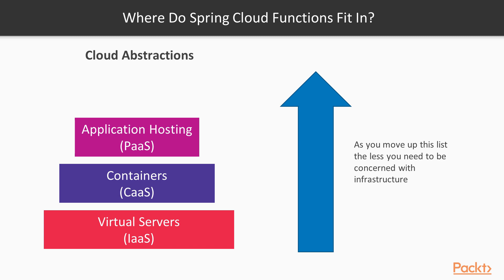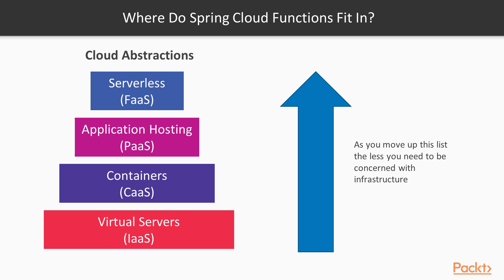Platform as a Service is more of an application-level serverless. And then finally we have Function as a Service, where the application has been broken down further into smaller business logic components in the form of functions that are deployed and interact with each other. With each layer of abstraction, the cloud provider manages more infrastructure. The serverless, or Functions as a Service layer at the top, is where Spring Cloud Functions are deployed.